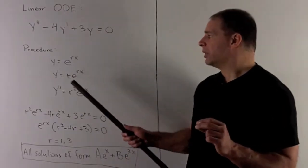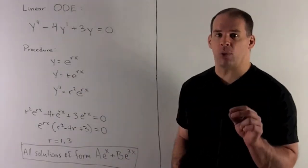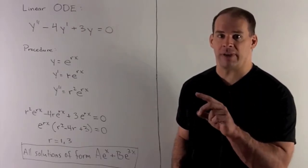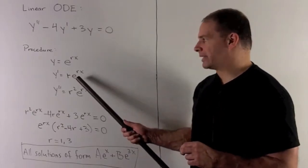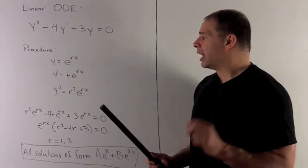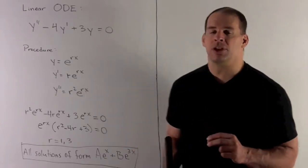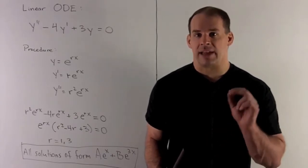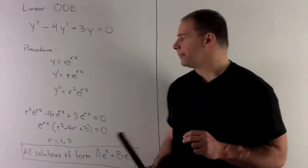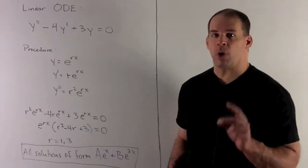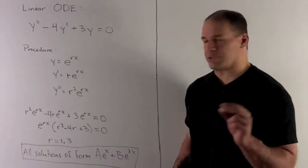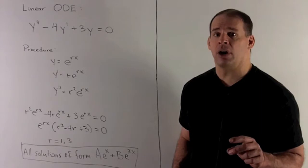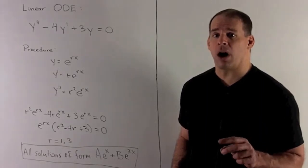Take the derivative, we have e to the rx, so this is going to be a chain rule. e to the anything, we take its derivative, just rewrite your e to the anything and then take derivative of anything. So we put that back down, derivative of the top is r. I do that again, so it's just going to bring another r down, so I have r squared e to the rx for y double prime. Now stick that into the equation. What comes out? We have r squared e to the rx minus 4r e to the rx plus 3 e to the rx equals zero. I factor out an e to the rx, what's left over, r squared minus 4r plus 3 equals zero.